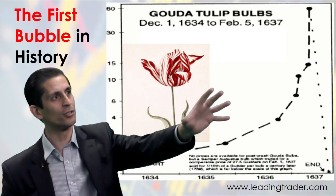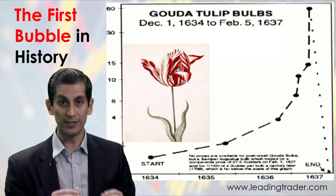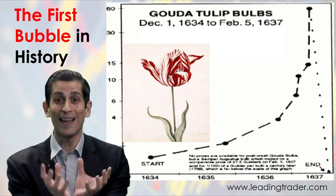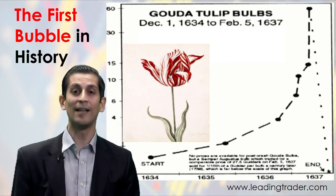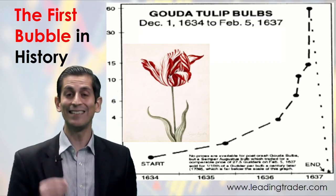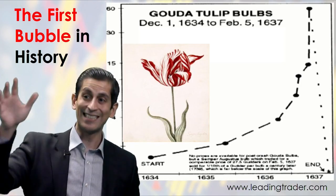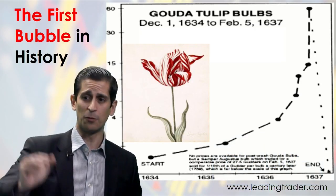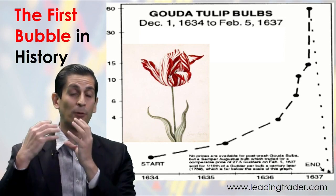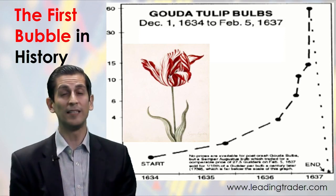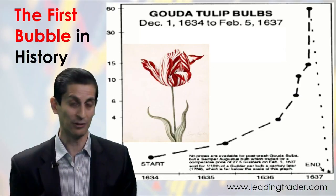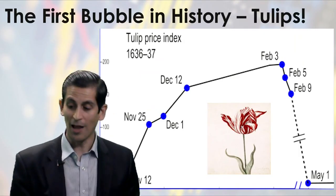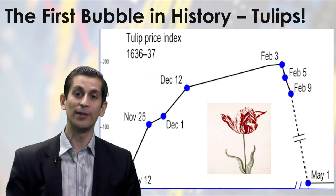Let's go back to the first recorded bubble in history — the tulip bubble. Can you ever imagine that the price of a tulip, a flower, could become more than the price of a house? Back in the 1630s, from 1634 to 1637, the price of the tulip skyrocketed, going from about six guilders to almost 60 guilders. The price of this flower became almost equal to someone's whole year's salary, or the price of a house. What happened to that bubble? It ended very badly — it crashed and burned. The bottom line is that patterns like this happen all the time, and we need to remember that the Bitcoin bubble can eventually see something like this.